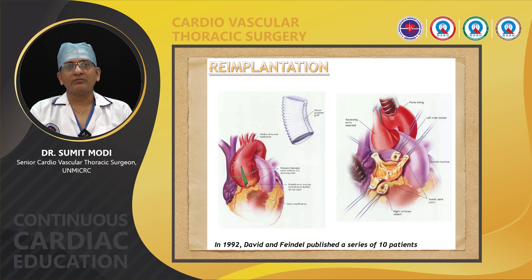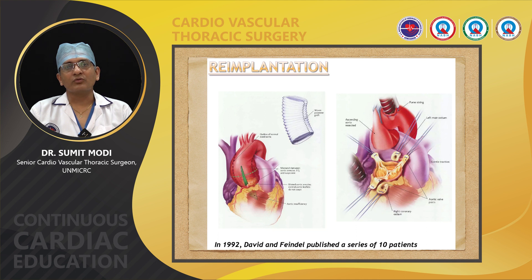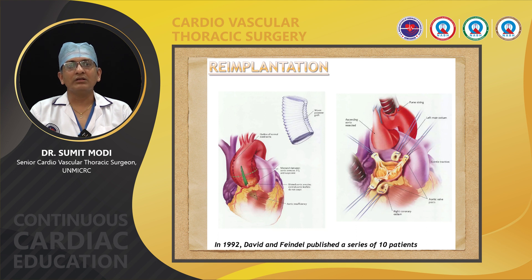The anatomy of the aortic valve has to be inspected for prolapse, calcification, perforation, vegetation, degeneration, or thickening, and a decision must be made about whether to go for repair or replacement. If the valve anatomy and morphology looks suitable for repair, we can go for repair and re-implantation of the aortic valve.